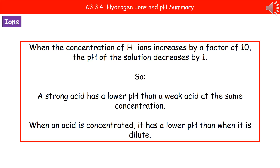What does this all mean in terms of pH? When the concentration of hydrogen ions increases by a factor of 10, the pH of that solution decreases by one. If we look at what that means in terms of concentration and strength — if we have ethanoic acid and nitric acid, a weak acid and a strong acid, at the same concentration, say one molar nitric acid and one molar ethanoic acid — then the nitric acid, being the strong acid, has a lower pH than the ethanoic acid, the weak acid.